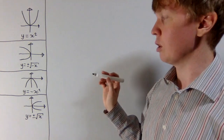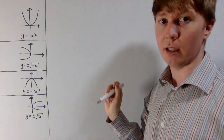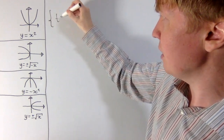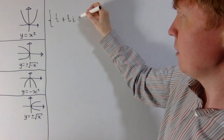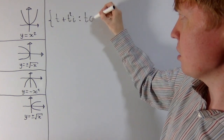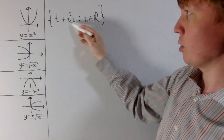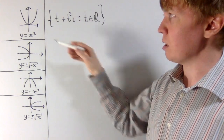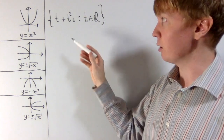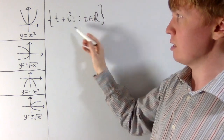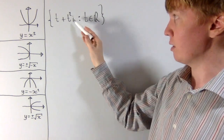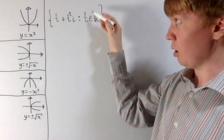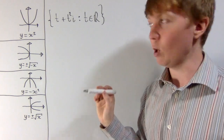To get a handle on the problem, we need a nice way of rotating this curve. I'm going to introduce complex numbers. I'll parametrize our curve using a variable t in the complex plane — the real part is t, which corresponds to x, and the imaginary part is t squared, corresponding to y equals x squared. The set of all these points for t in the reals, drawn in the complex plane, gives the exact same curve as in the xy plane.